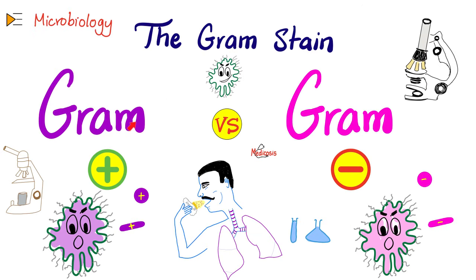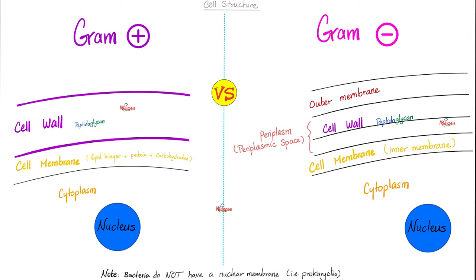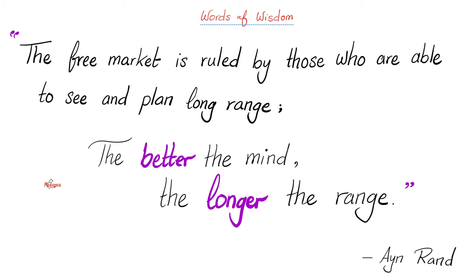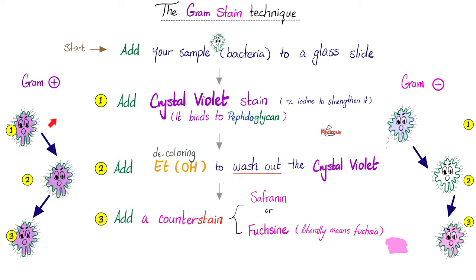The gram stain: gram positive is purple; gram negative is pink. Why the difference? It depends on the thickness of the peptidoglycan layer of the cell wall. The cell wall is thicker in gram positives compared to gram negatives. The thicker the wall, the purpler the stain. Gram positives have a thicker wall, so they appear purple. But gram negatives have a thinner wall, so you wash away the purple and they acquire the pink stain.